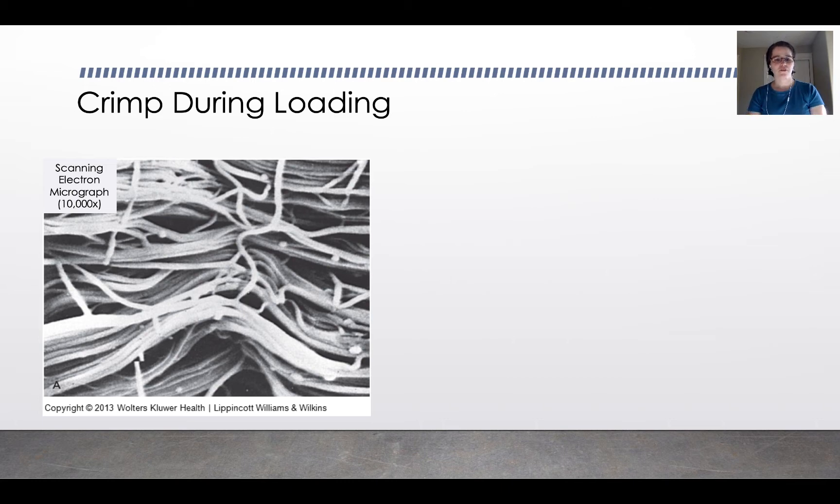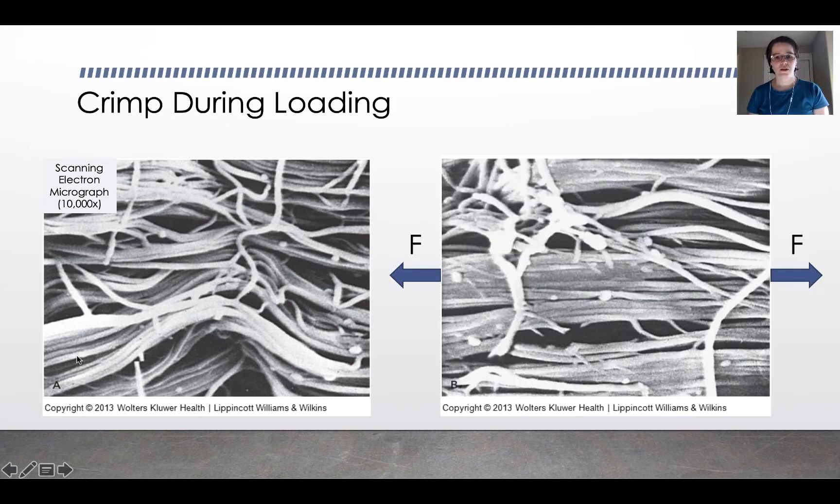If you take a micrograph of the collagen fibers, if you take an SEM image, scanning electron microscope image, of the collagen fibers in tendon and ligament when it's unloaded, you'll see that the collagen has a little bit of a disorganized, crimped appearance. You can see the wave of the crimp right here in the tissue. If you apply a load to it, you'll see that the fibers straighten out like this.